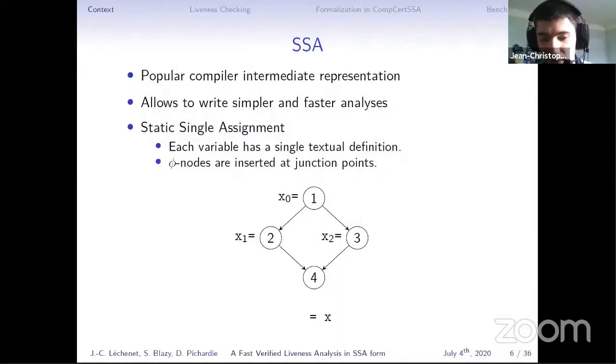And now we just have one assignment for each. But now the question is, in four, which version of x should we use? For that, SSA introduces special phi nodes at junction points that select the right version of the variable depending on where the flow comes from. For example, here, if it comes from two, it will select x1. And if we come from three, it will select x2.